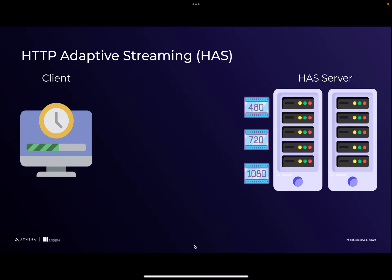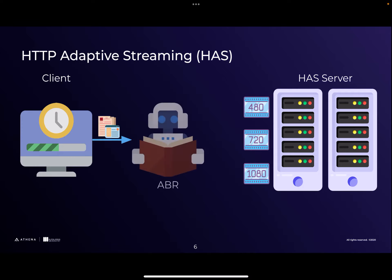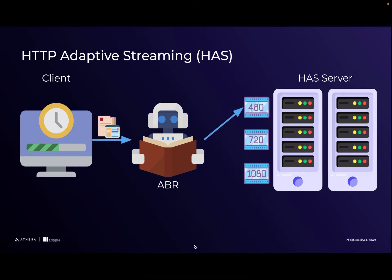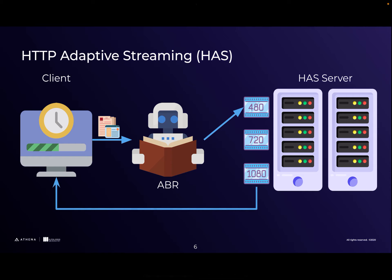When the client wants to play back a video, it first sends information like network status and buffer condition to the ABR algorithm, which is situated on the client side or server side. The ABR gets this information, evaluates it, and then picks the suitable representation from the server. The server sends the representation to the client and playback begins. Over time, as network conditions change, the ABR can request a different quality and playback continues as soon as the segment arrives.